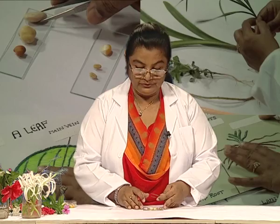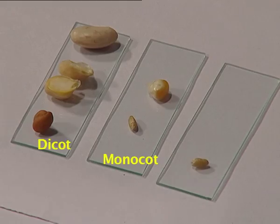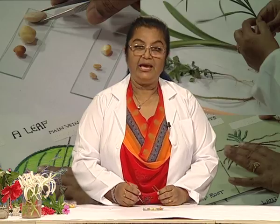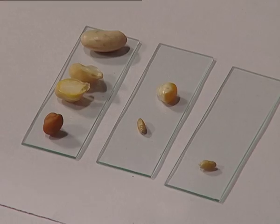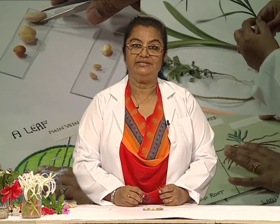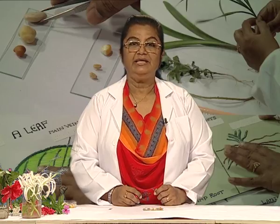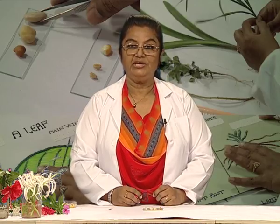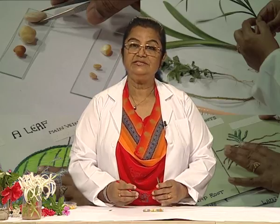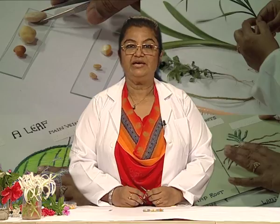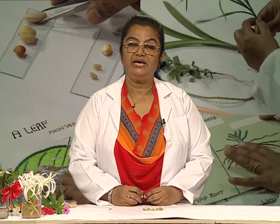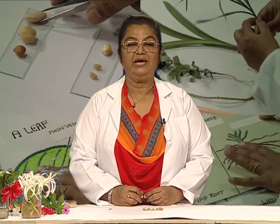We conclude that maize and wheat are monocotyledonous plants because they have only one cotyledon. And bean, gram, and chickpea are dicotyledonous plants because we could split their seeds into two cotyledons. So, friends, we see that the basis of classification of angiosperms into monocots and dicots lies at the seed stage itself. Those plants which have seeds with two cotyledons are known as dicots, and those plants which have seeds with only one cotyledon are known as monocots.